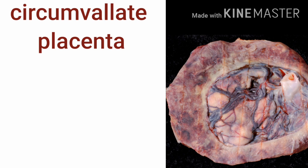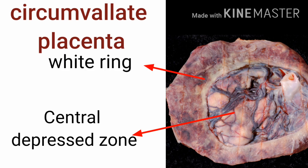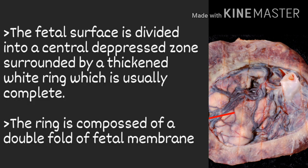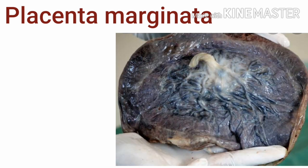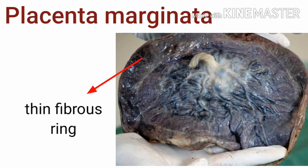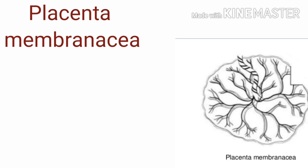In circumvallate placenta, we can see a centrally depressed zone surrounded by a thickened white ring, which is usually complete. This ring is composed of a double fold of fetal membrane — the amnion and chorion. Moving on to the second type, placenta marginata: here also a ring is formed, but it is a thin fibrous ring formed at the margin of the chorionic plate.